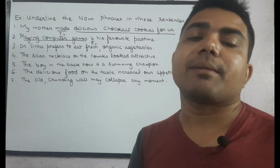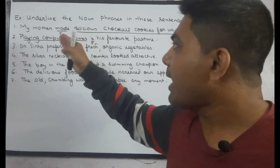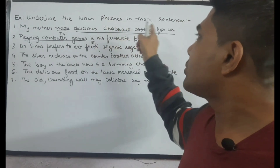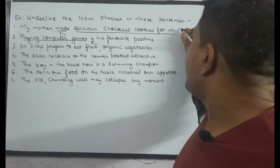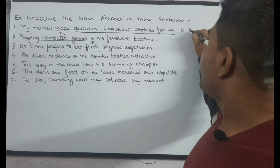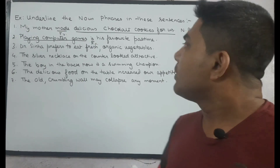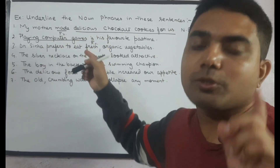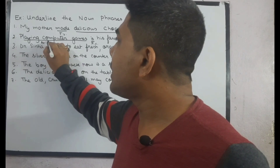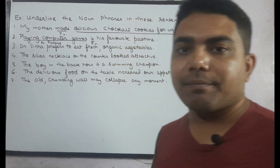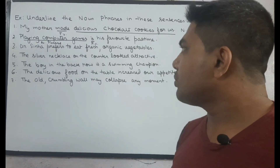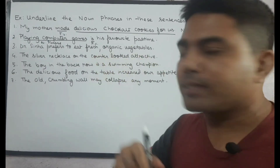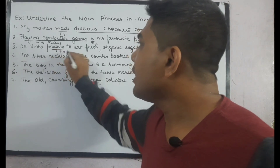So for sentence one — 'My mother made delicious chocolate cookies for us' — my mother made what? The answer is 'delicious chocolate cookies for us,' so this is the noun phrase. Next, what is his favorite pastime? The answer is 'playing computer games,' so 'playing computer games' is the noun phrase.